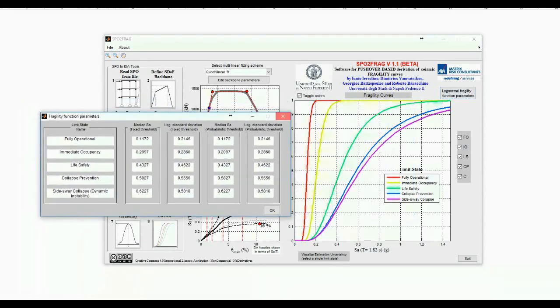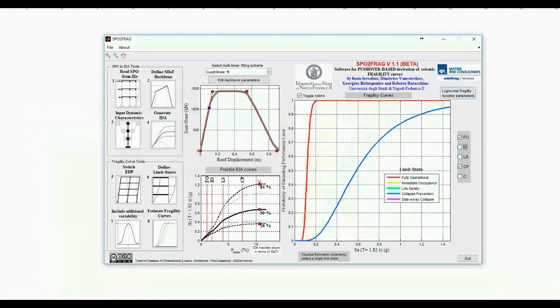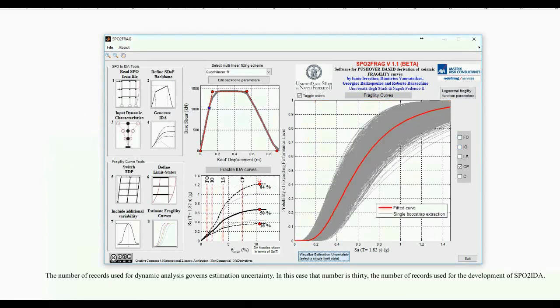By deselecting some curves from the checklist to the right, and pressing the button Visualize Estimation Uncertainty, we get to see a fixed number of 2500 parametric bootstrap extractions for that fragility curve.